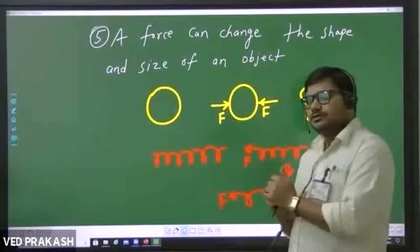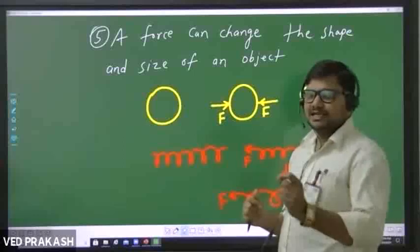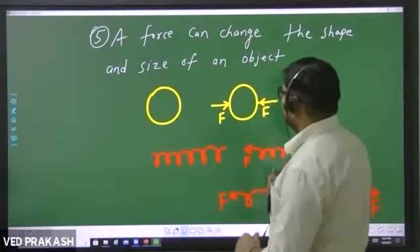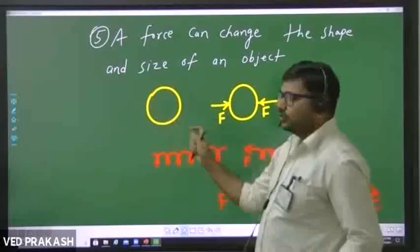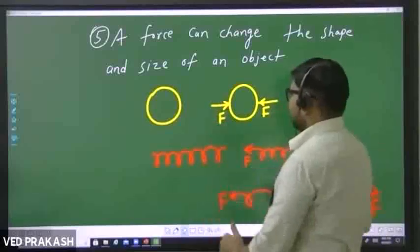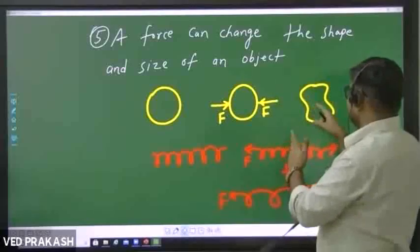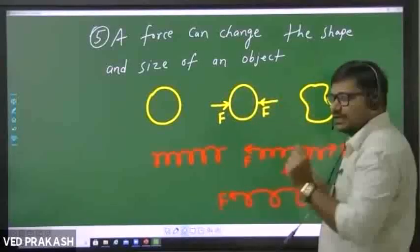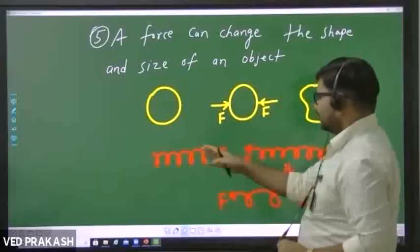The last effect of a force is a force can change shape or size of any object. This is a spherical ball, and suppose this is made up of rubber. Then by applying force from both sides, you can change its shape from spherical to an irregular shape. See another example.